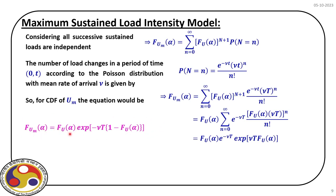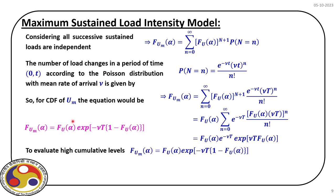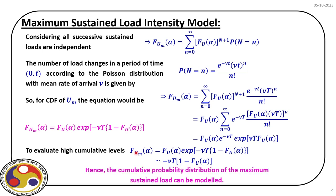The CDF of U_M crossing the threshold alpha is given by the compact form incorporating the Poisson distribution. This tells us the model for ultimate maximum live load on a structure during total lifespan T, which can now be used for design. We have identified the characteristic load and the ultimate maximum lifetime load using these two expressions.